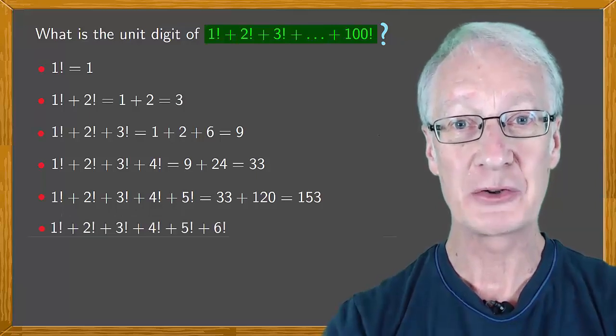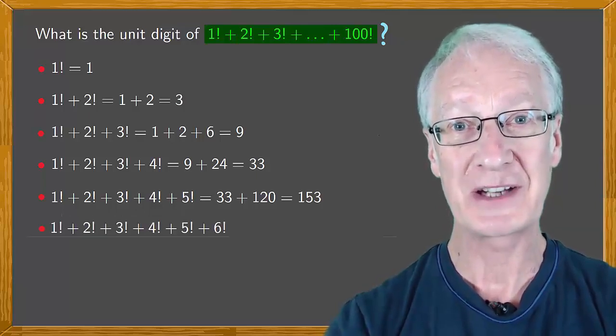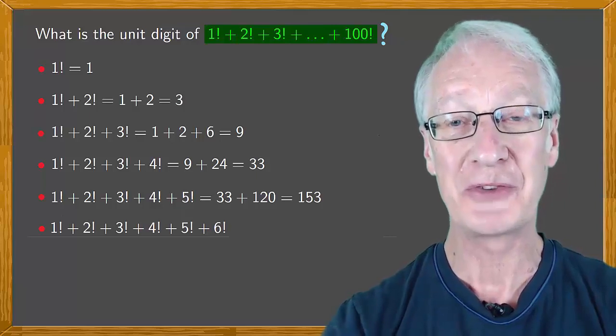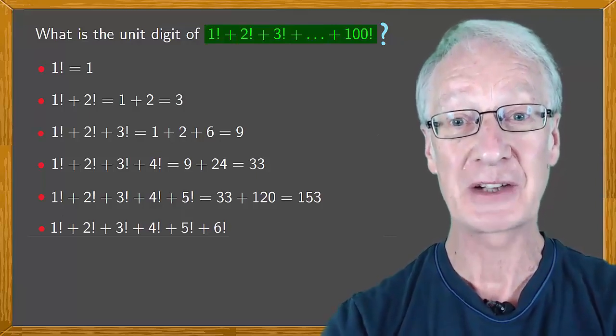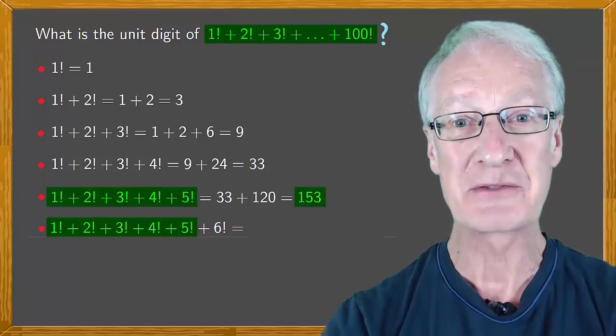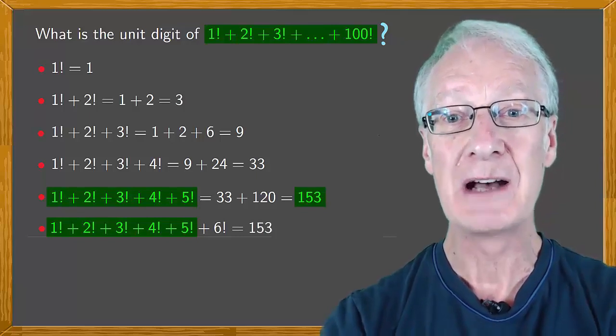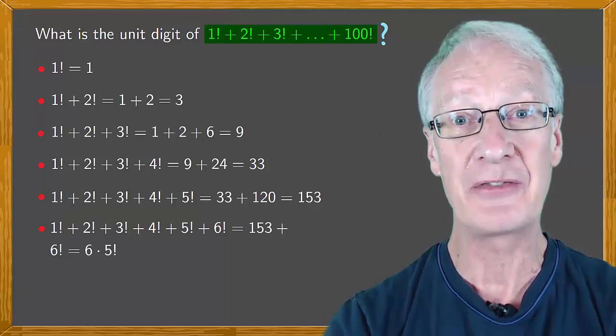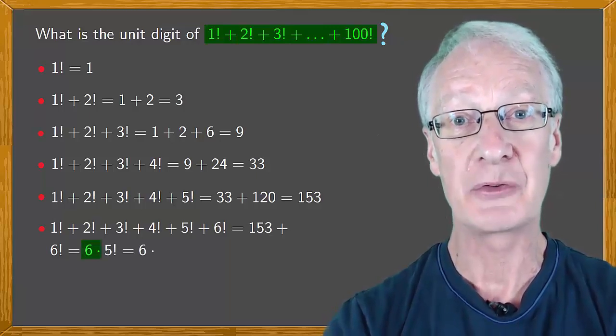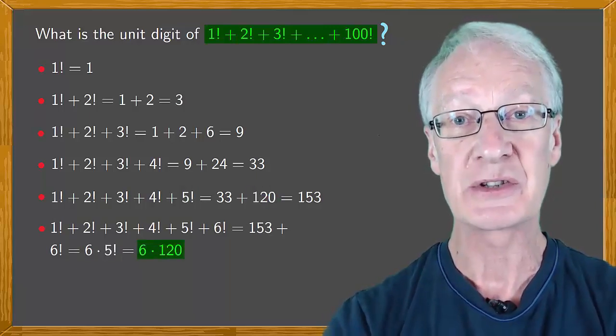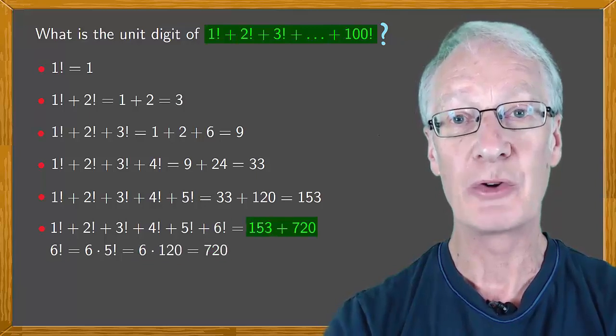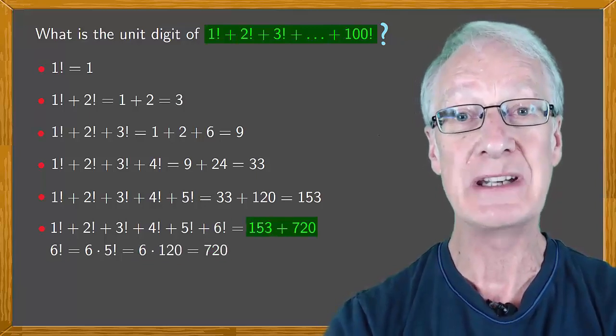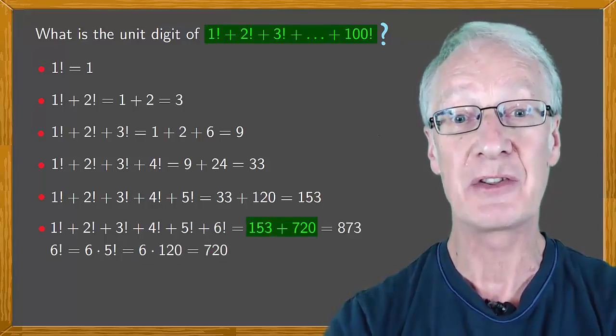Next up is 1! + 2! + 3! + 4! + 5! + 6! which is 6! which is 6 times 5! or 6 times 120 which is 720, and 153 + 720 is 873.